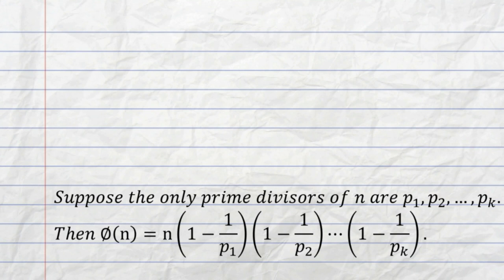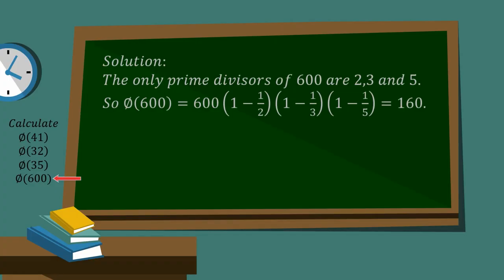Suppose the only prime divisors of N are P1, P2, through to Pk. Then phi of N is just N times, you can see here, 1 minus 1 on P times 1 minus 1 on P2. And the product continues right up to 1 minus 1 on Pk. So let me just put that up for, if we wanted to do that for 600, we could solve it in this way.